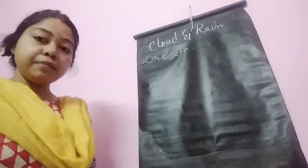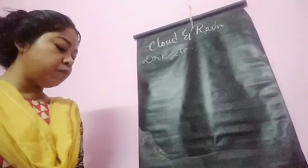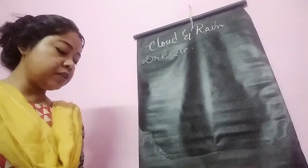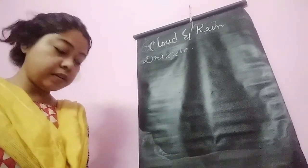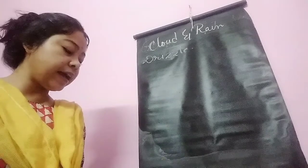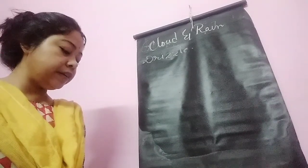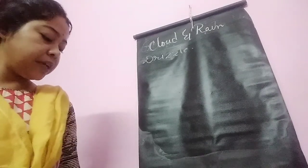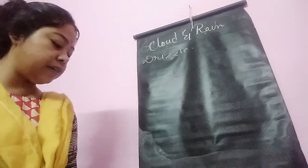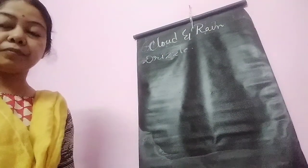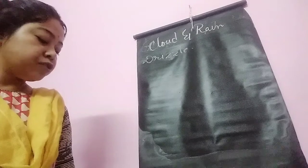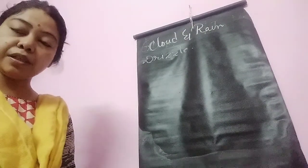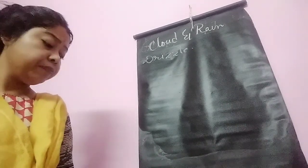Drizzle. Sometimes very small droplets of water about 0.5 mm diameter falls on the earth, usually from stratus cloud. These drops are so light that they float in the air and can merely be felt. This kind of precipitation takes place when saturation of air takes place near the earth surface.